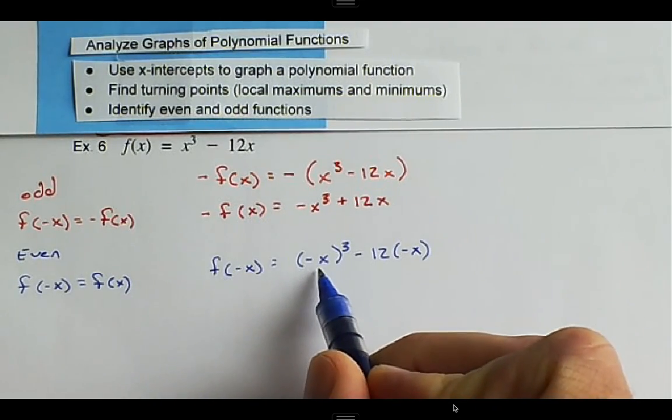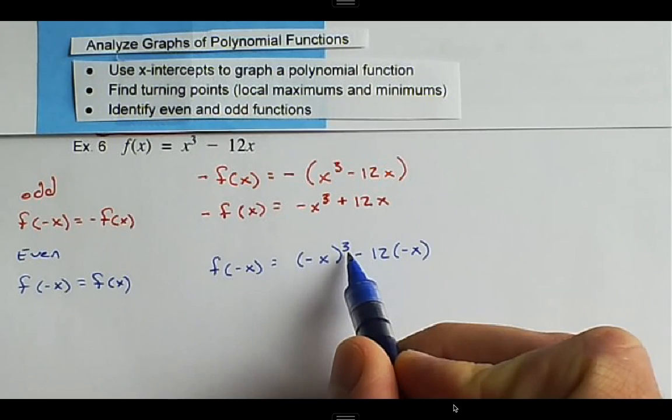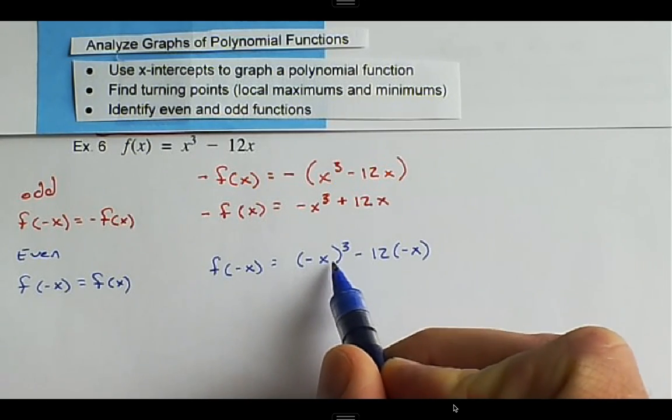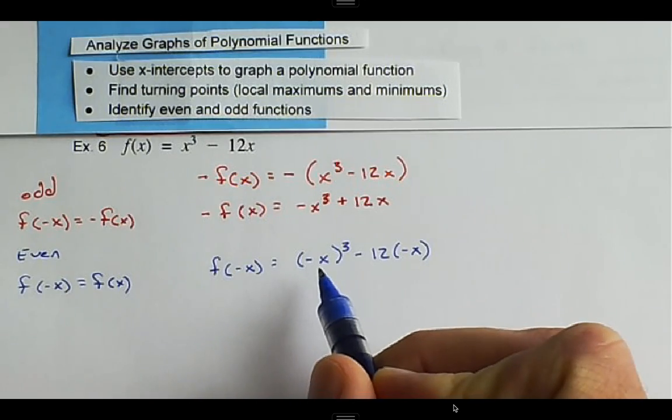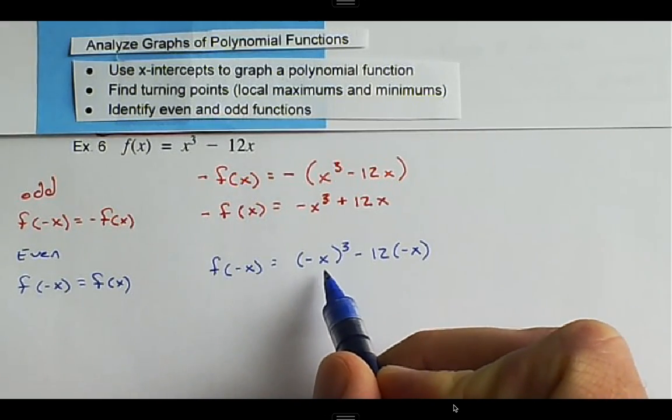Because the x value is raised to an odd exponent, the negative will remain negative because eventually it'll be a positive multiplied by a negative, and that will stay negative.